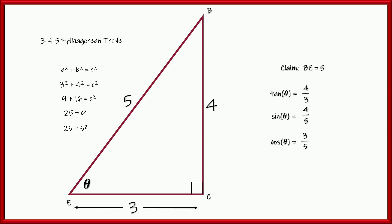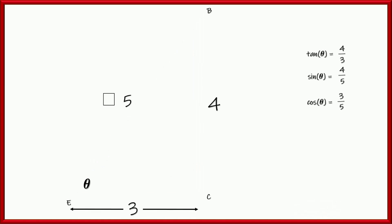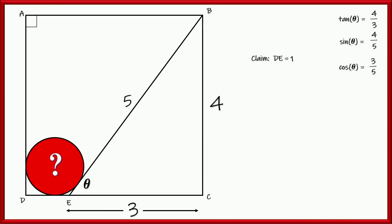So what I'm going to do is just express tangent, sine, and cosine of this angle theta as 4/3, 4/5, and 3/5. Let's tuck that information away. We can also claim that DE is a length of 1 because that's a square with side lengths of 4, and from C to E is 3, so that leaves a distance of 1 right there.